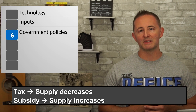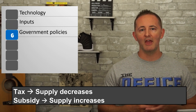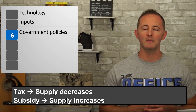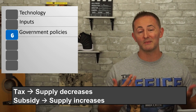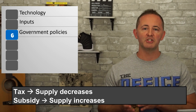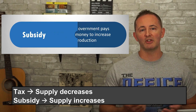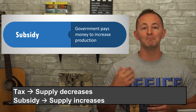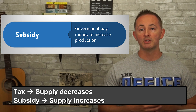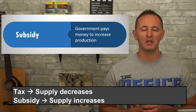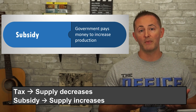The G is for government policies, specifically taxes and subsidies. If a government places a tax on a good, supply decreases because it's now more expensive to produce it — this shifts the supply curve to the left. A subsidy is basically the opposite of a tax; it's where the government provides money to encourage the production of something. This will increase supply because producers want to receive the subsidy, so they produce more.